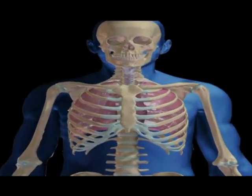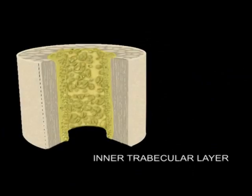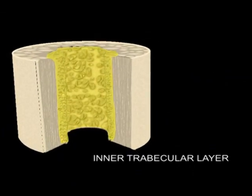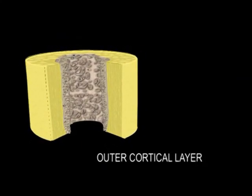The skeletal system is the structural framework of the body composed of approximately 200 bones in adults. The bones have an inner trabecular layer composed of cancellous bone and an outer cortical layer composed of compact bone.